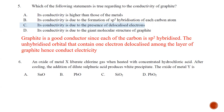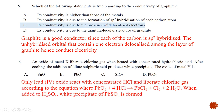Question number six: an oxide of metal X liberates chlorine gas when heated with concentrated hydrochloric acid, and after cooling, addition of sulfuric acid produces a white precipitate. This describes lead dioxide. PbO2 reacts with concentrated HCl according to: PbO2 + 4HCl → PbCl2 + Cl2 + 2H2O. The PbCl2 then reacts with sulfuric acid to form PbSO4 as the white precipitate. The best answer is D.